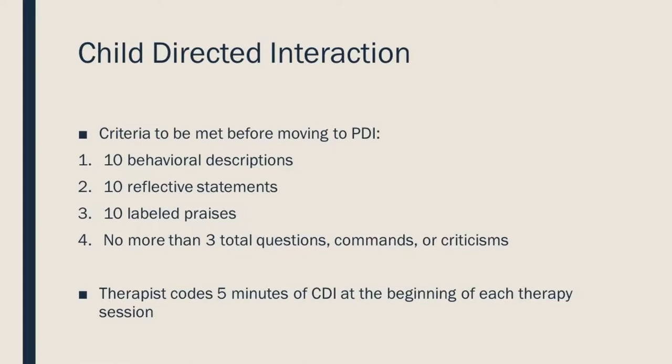One great thing about PCIT is that because the focus is so heavy on skills, before moving from the child-directed interaction, parents actually have to meet a certain criteria: having 10 behavioral descriptions, 10 reflective statements, 10 labeled praises, and no more than three total questions, commands, or criticisms. This is measured during the first five minutes of child-directed interaction, where the therapist codes the data and then starts coaching parents on what they need to work on.